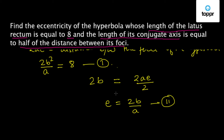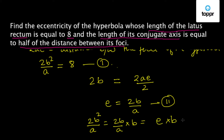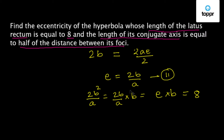From equations 1 and 2 combined, we can write 2b²/a = (2b/a) × b. Since 2b/a equals E from equation 2, this becomes E × b = 8. Therefore, b = 8/E.